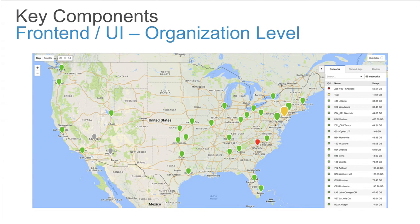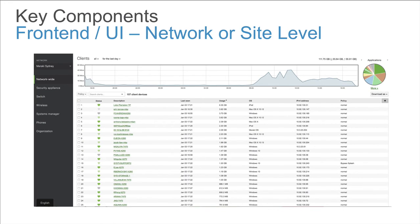The front-end interface is where all Cisco Meraki configuration and monitoring takes place and is comprised of many different pages with different functions. Generally speaking, there are four levels at which to view or configure. The first is the organization level — effectively the account level — used when viewing monitoring data or making changes across the customer's entire deployment, as seen here. The second level is the network level. Networks are configuration containers within an organization and they are usually, though not always, aligned to a physical site or location.